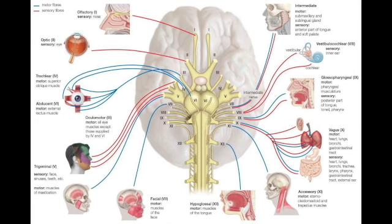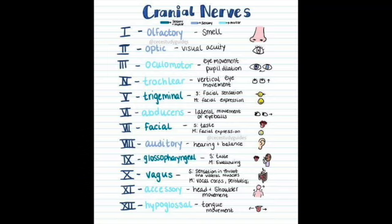CN8 (vestibulocochlear) handles hearing (tested with Weber and Rinne test) and vestibular function (balance and proprioception); abnormality is acoustic neuroma. CN9 (glossopharyngeal): motor for swallowing and gag reflex; sensory for taste on posterior one-third of tongue. CN10 (vagus): motor for voice, soft palate, and gag reflex; sensory relays information about pulmonary, heart, and GI organs. CN11 (accessory): motor — shrugs shoulders, turns head (trapezius and SCM). CN12 (hypoglossal): motor for the tongue; inspect for fasciculations and asymmetry.